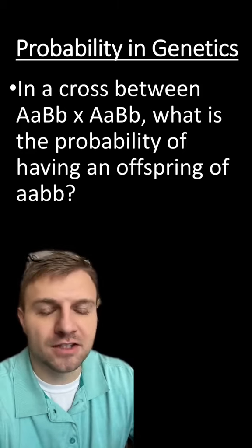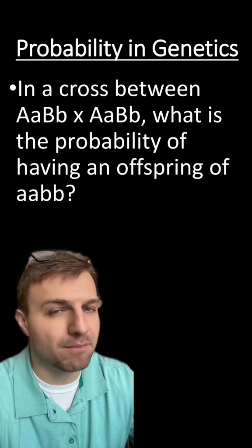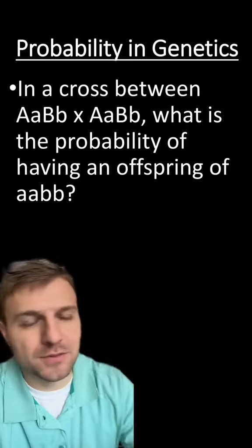Basically, this question is asking, what's the chance of having a certain offspring between two parents? The parents are both heterozygous for each genotype, big A, little a, big B, little b. And we want to know what the chance of having this offspring would be.